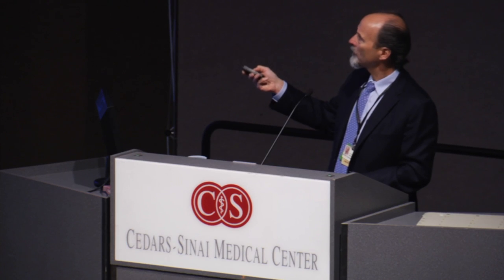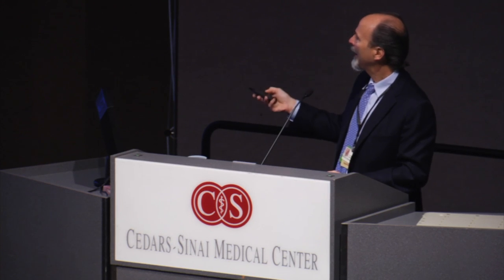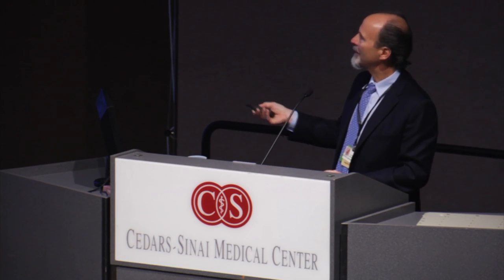Regarding tumor grade, the pathologist applies the Fuhrman grade, which is used for renal cell carcinomas — a grading system from one to four. It delineates the degree of differentiation: grade one is well-differentiated, grade four is poorly differentiated. As with any tumor type — breast, colon, renal cell carcinoma — well-differentiated tumors generally behave better than poorly differentiated tumors. We assess the tumor under the microscope and assign a grade based on our observation.